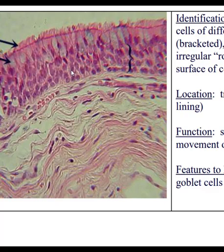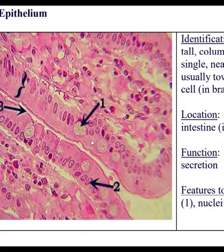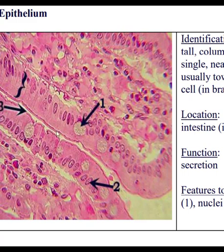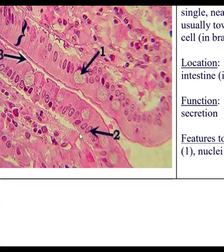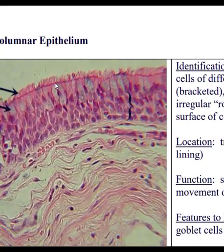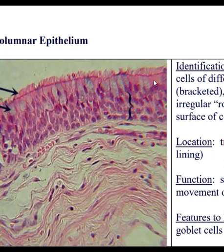Don't get the simple columnar mixed up with pseudostratified columnar — they're also at different magnifications, which makes it a little awkward. The simple columnar cells have microvilli, which are extensions off the cells, while the pseudostratified cells have cilia, which are hair-like structures that wave upward toward the voice box.